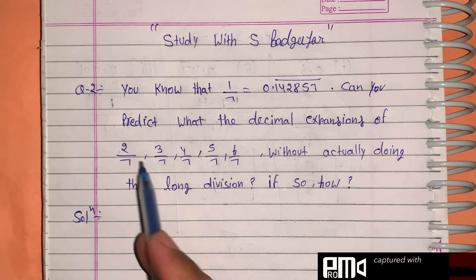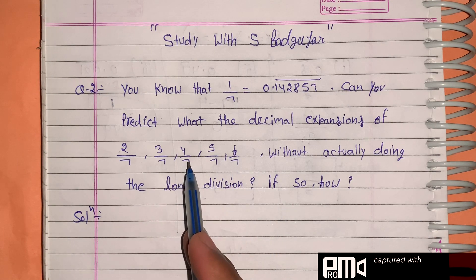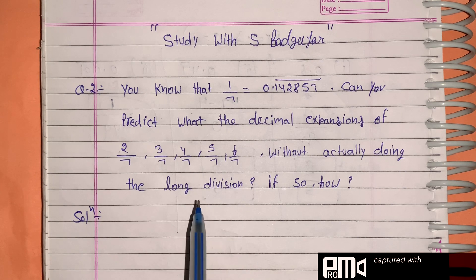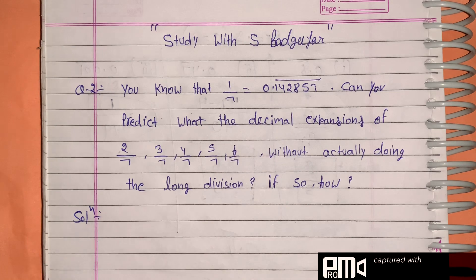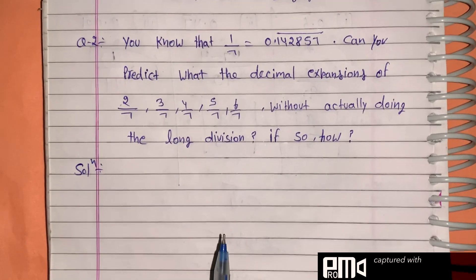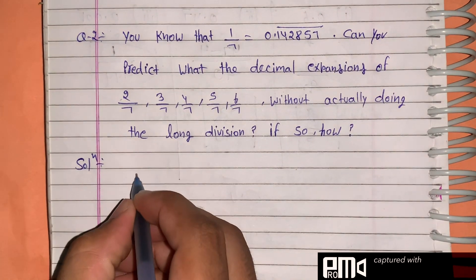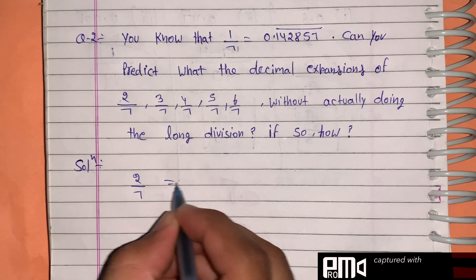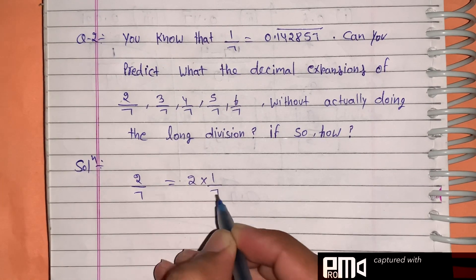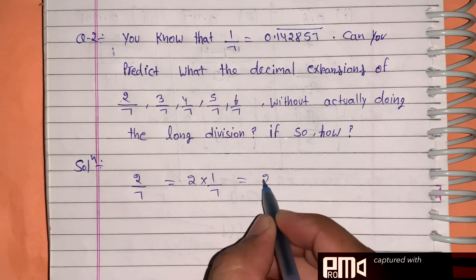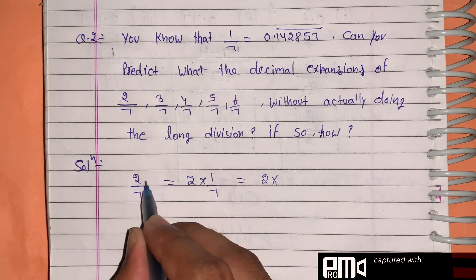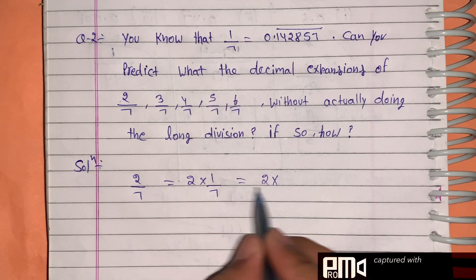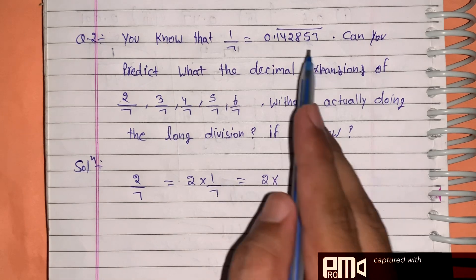It is said that their decimal expansion has to be found without doing long division. So how do we do this? For 1/7, we use the given decimal expansion. First, let's take 2/7. We can write 2/7 as 2 times 1/7.